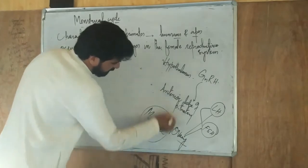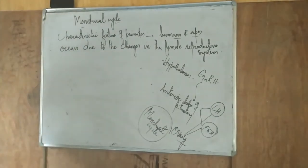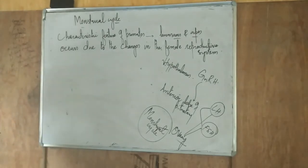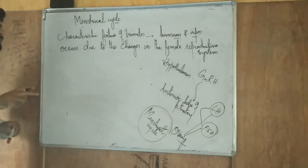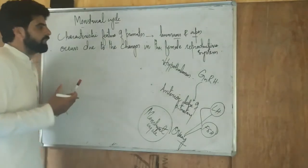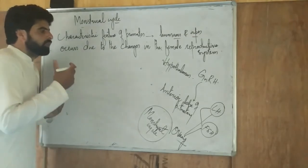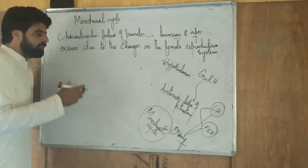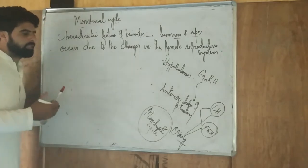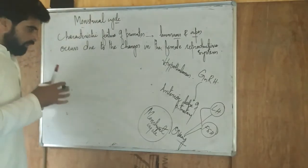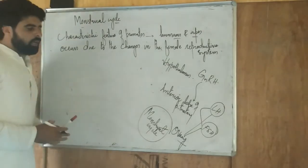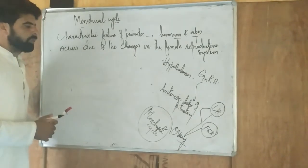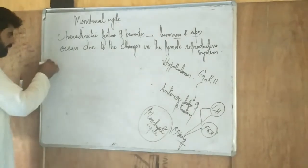The hormones responsible are luteinizing hormone and follicle stimulating hormone, secreted by the anterior lobe of the pituitary. The hypothalamus gets activated at puberty to secrete GnRH, which activates the anterior lobe pituitary to secrete luteinizing hormone and follicle stimulating hormone, which activate the ovary, leading to the menstrual cycle.